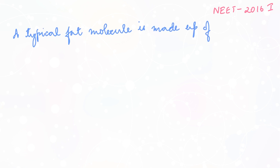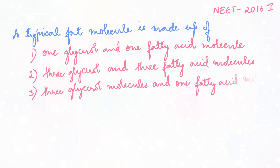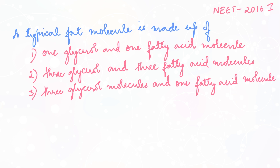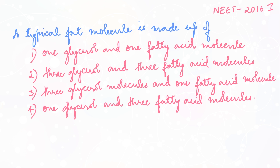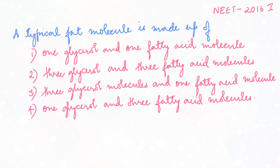This question is from NEET 2016, first exam: a typical fat molecule is made up of — 1 glycerol and 1 fatty acid; 3 glycerol and 3 fatty acids; 3 glycerol and 1 fatty acid; or 1 glycerol and 3 fatty acids. Looking at a fat molecule, you can see a glycerol molecule attached to 3 fatty acids through ester bonds. So the answer is option 4: 1 glycerol and 3 fatty acid molecules.